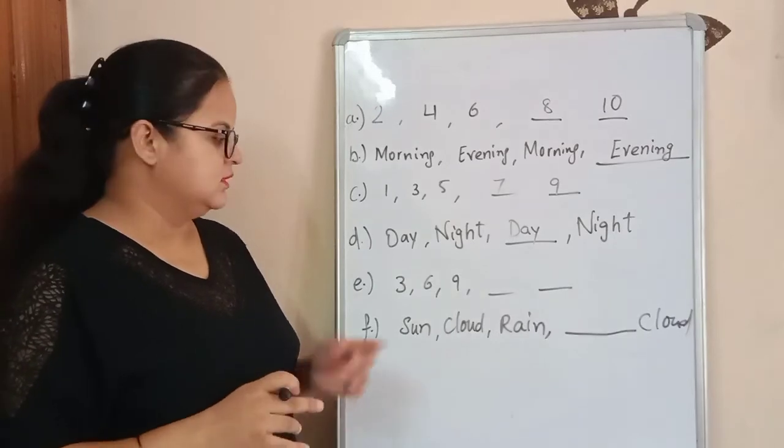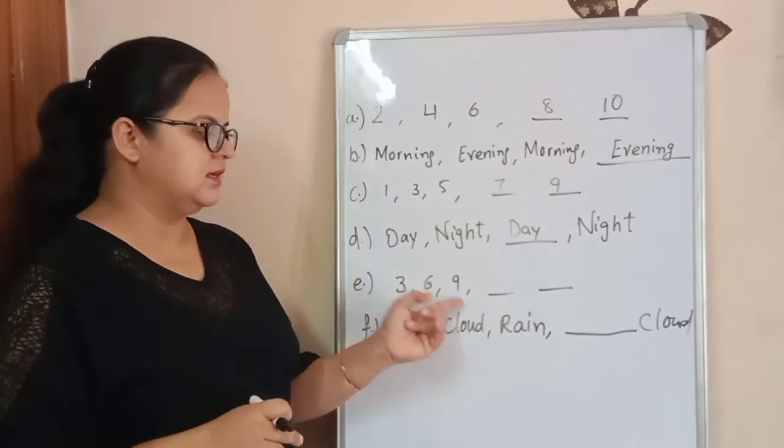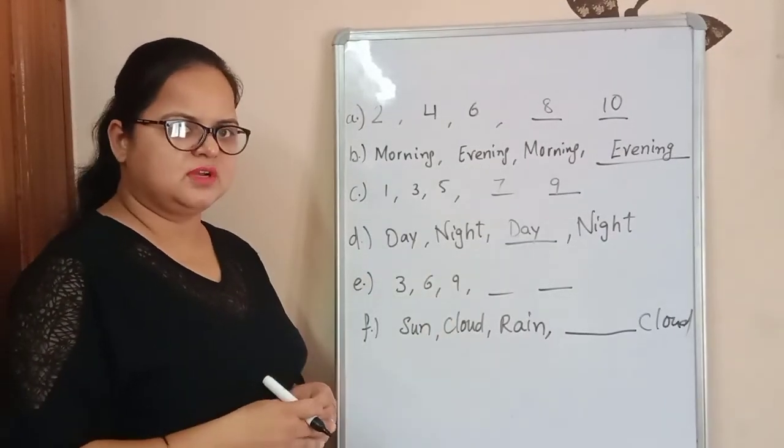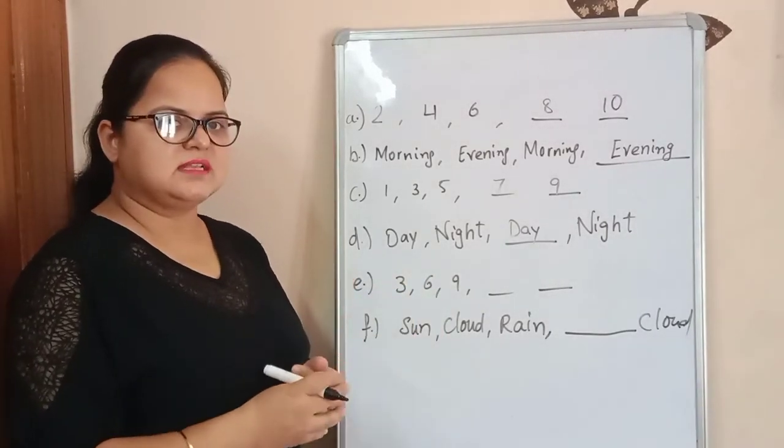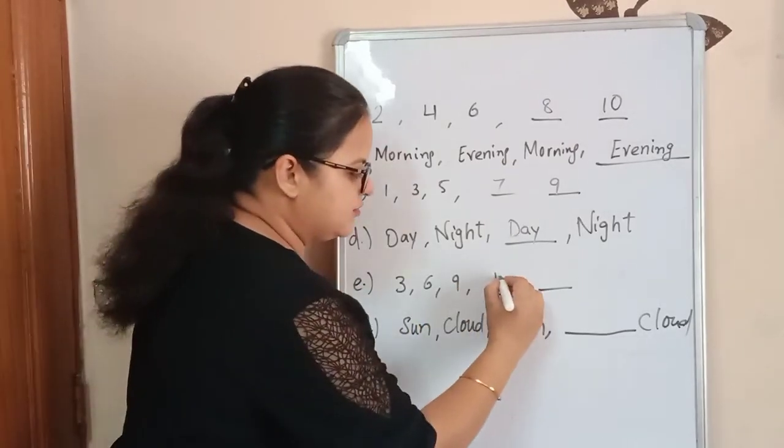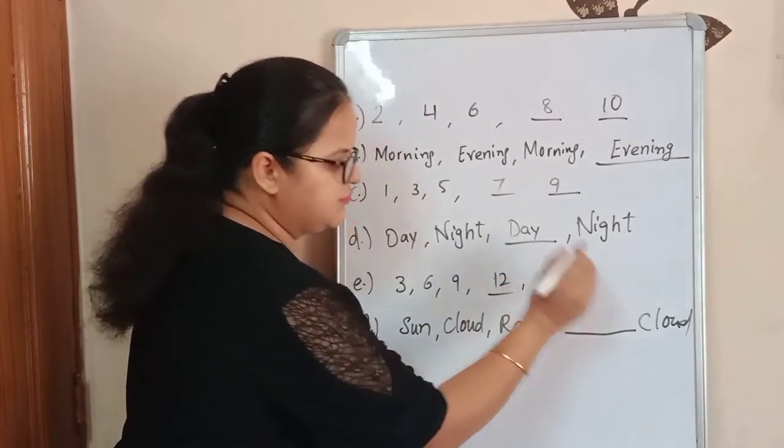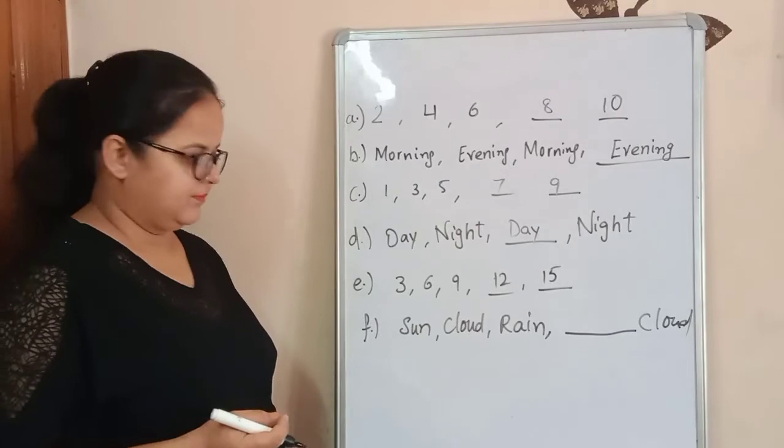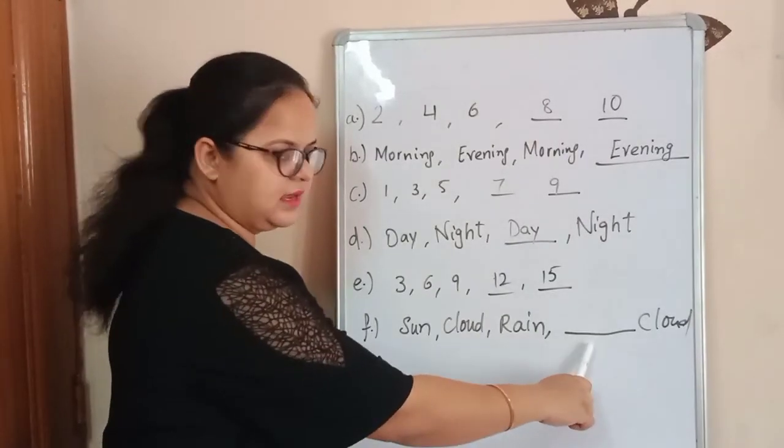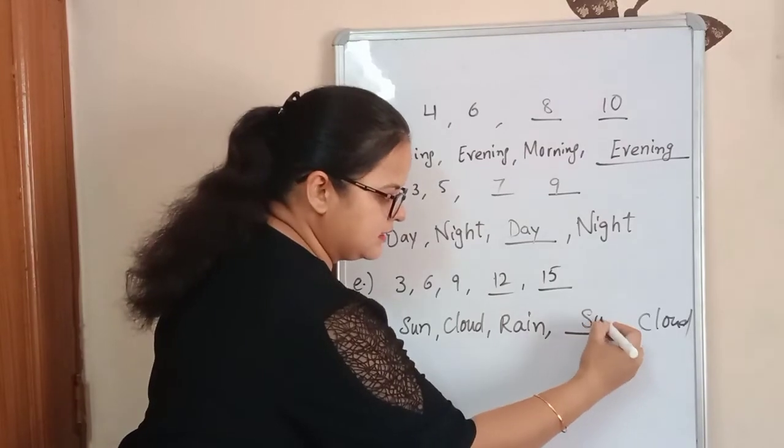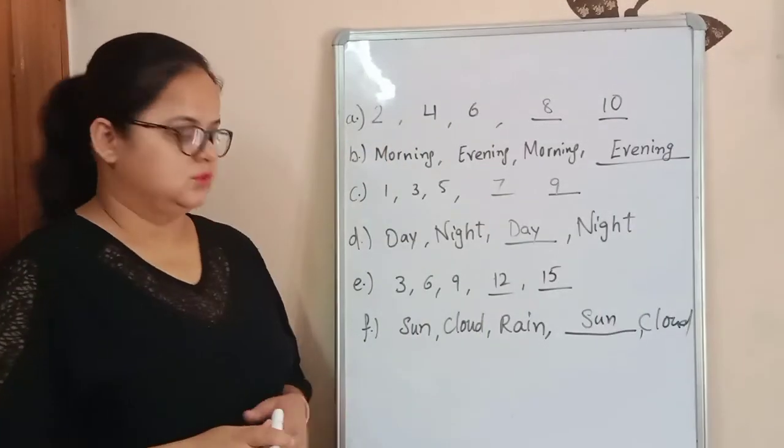Three, six, nine. This is the table of three. Three ones are three, three twos are six, three threes are nine. What comes next? Three fours are twelve and three fives are fifteen. Sun, cloud, rain. Again, sun, cloud is written here. So this is done, I hope you all have done it in your books now.